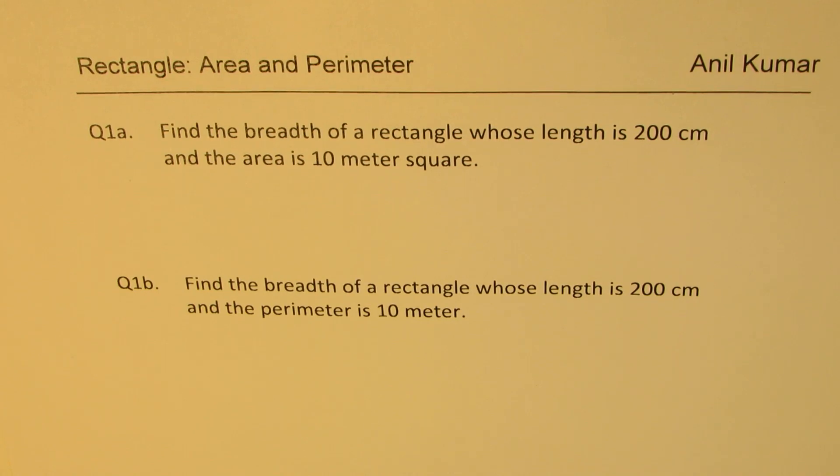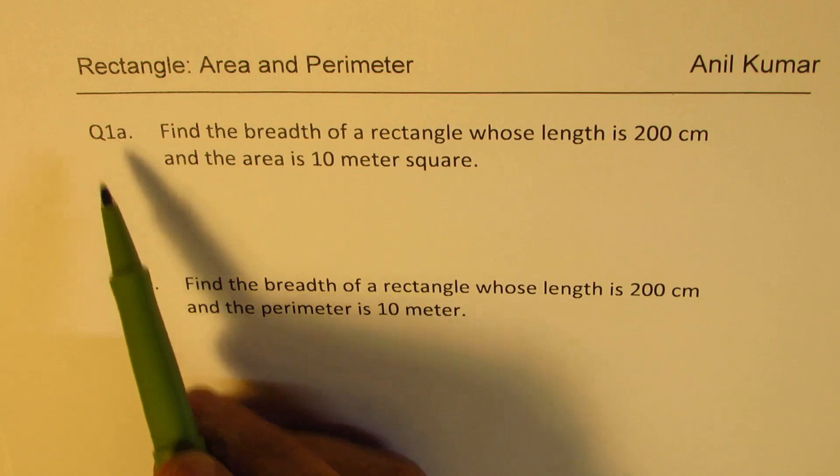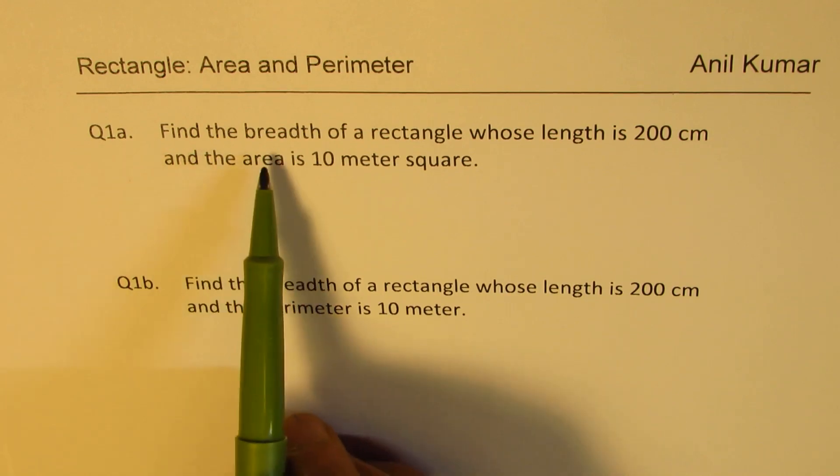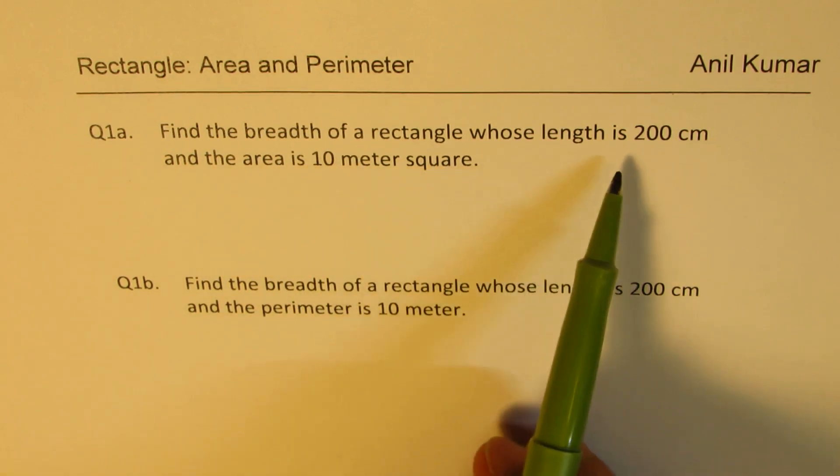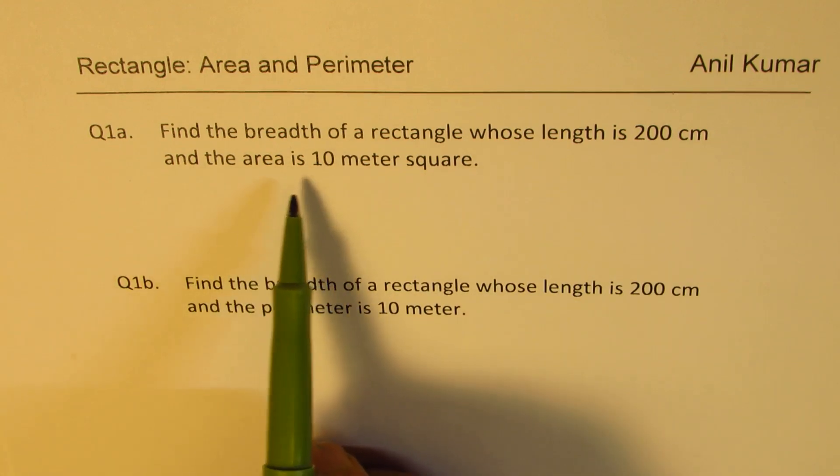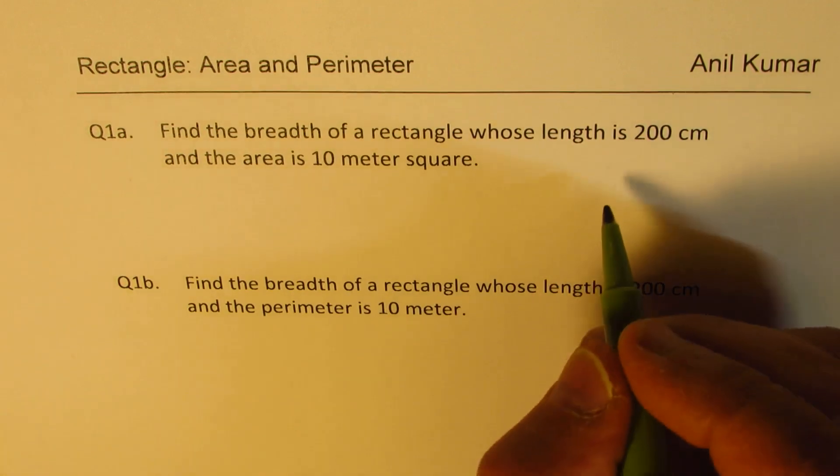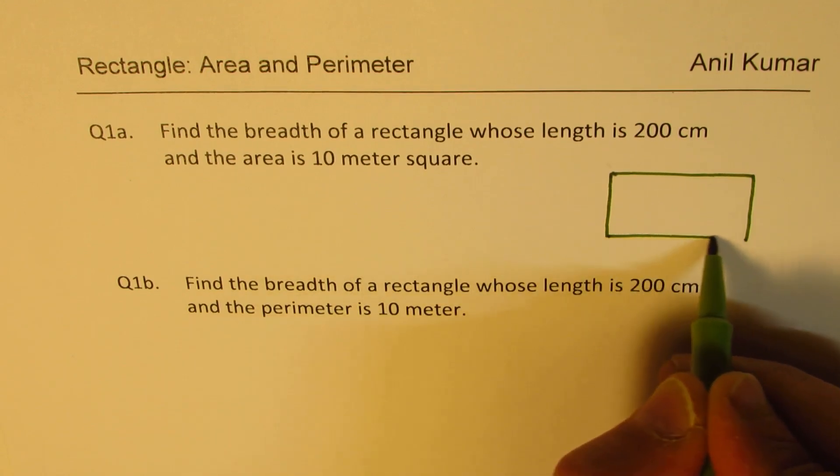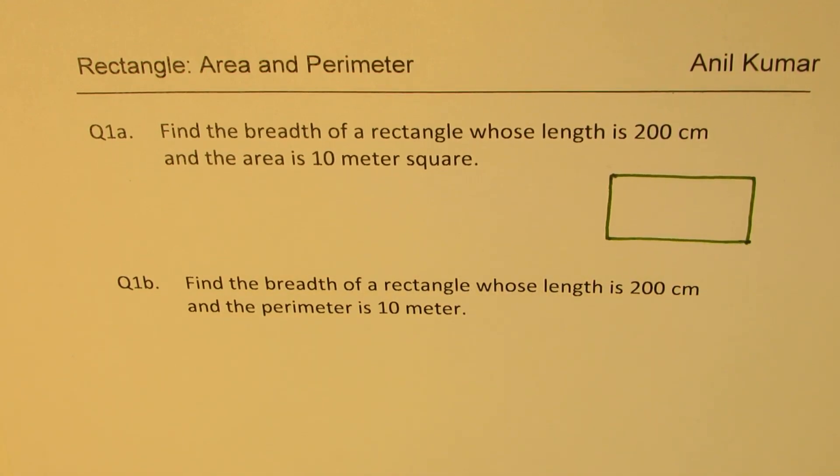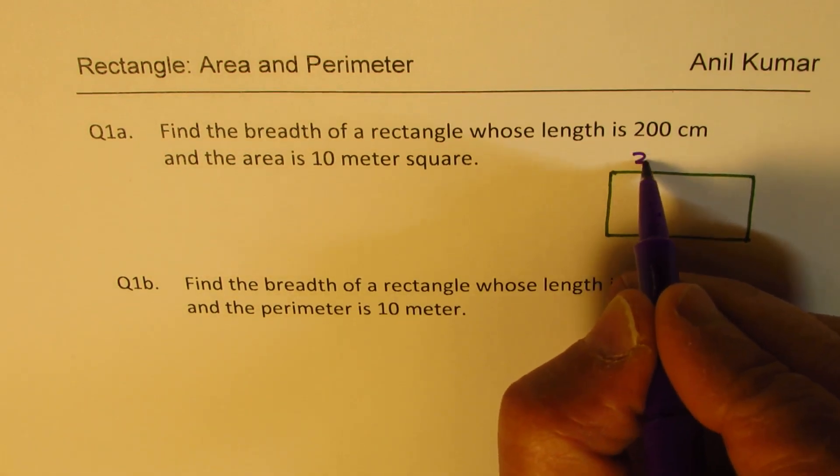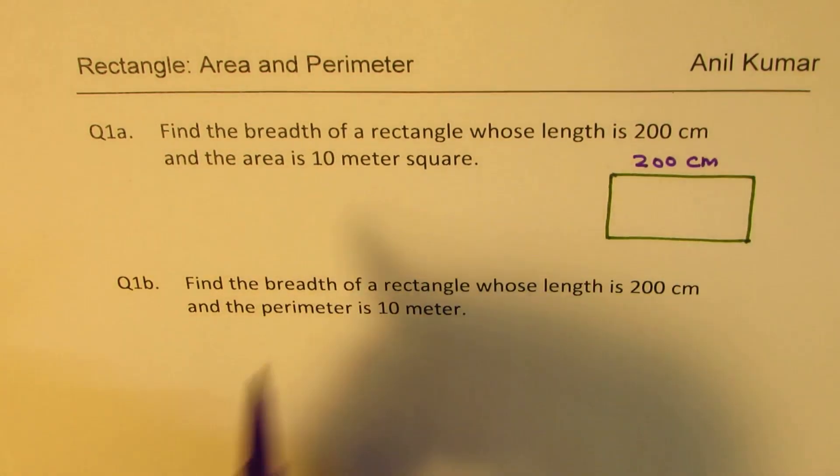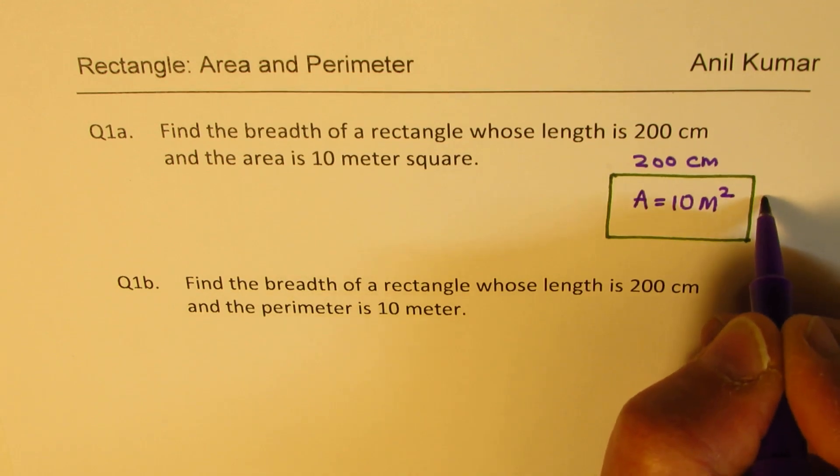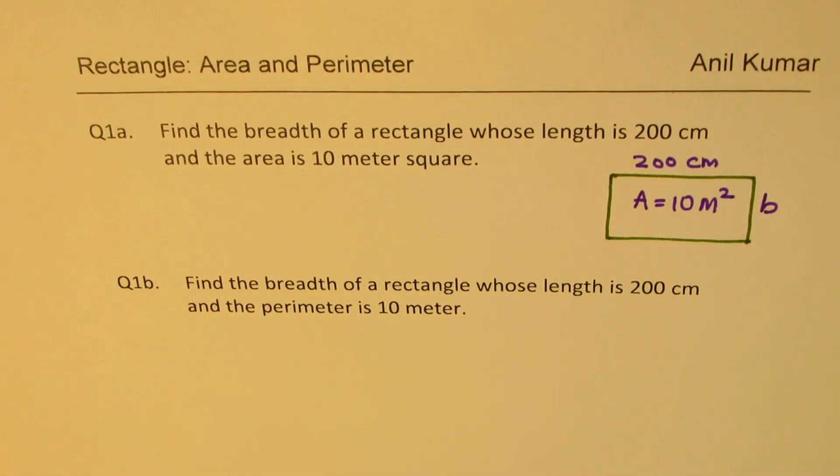We're talking about rectangle, area and perimeter. I have this question in two parts. Question 1a is: find the breadth of a rectangle whose length is 200 centimeters and area is 10 meters squared. Let me construct a rectangle here to understand the situation. We are given that the length is 200 centimeters, the area equals 10 meters squared, and we need to find the breadth B.